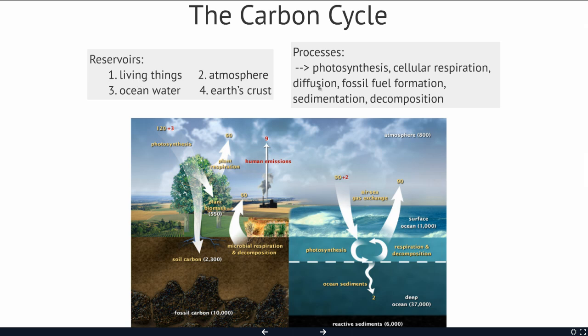Diffusion—the movement of molecules from high to low concentration—is really important in moving carbon between the oceans and atmosphere. As CO2 in the atmosphere increases, more will diffuse into the ocean water. If CO2 decreases, it will diffuse out of the ocean water.